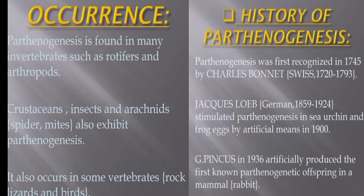Parthenogenesis occurs naturally in some plants, some invertebrates, and animal species including nematodes, some butterflies, aphids, some mites, some bees, and some parasitic wasps. A few vertebrates such as some fish, amphibians, reptiles, and very rarely birds. This type of reproduction has been induced artificially in a few species including fish and amphibians.